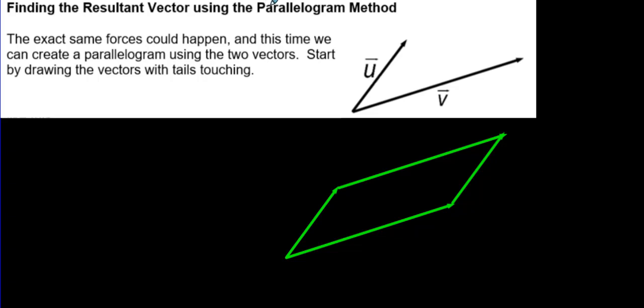And you do the same thing as before. You still start at the point where they met and draw that vector all the way over to where they end up. As you can see, we have a parallelogram.